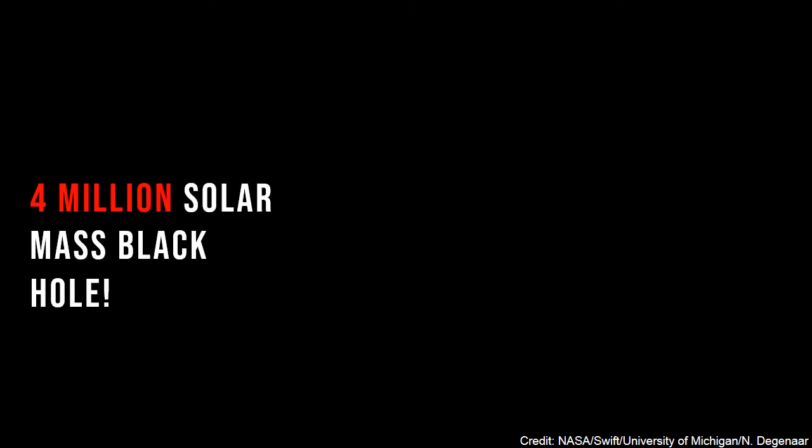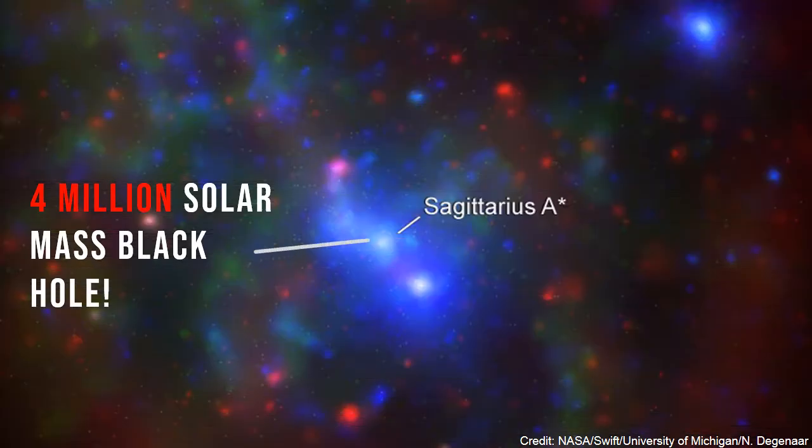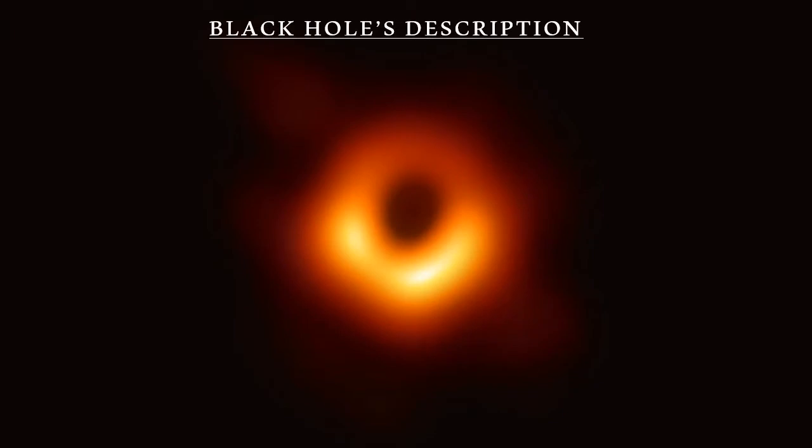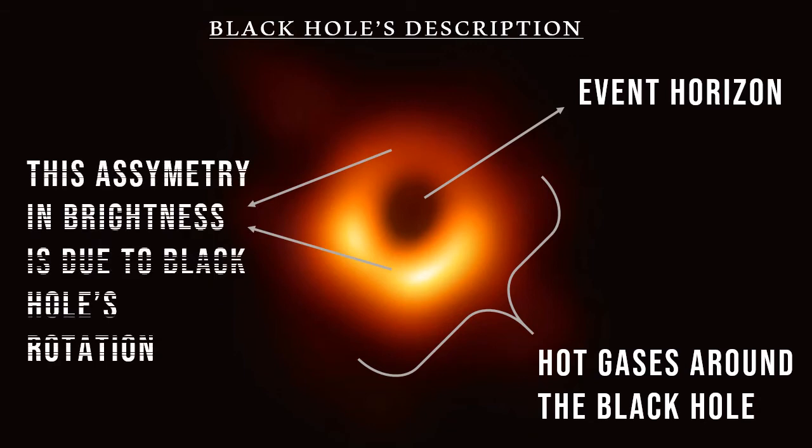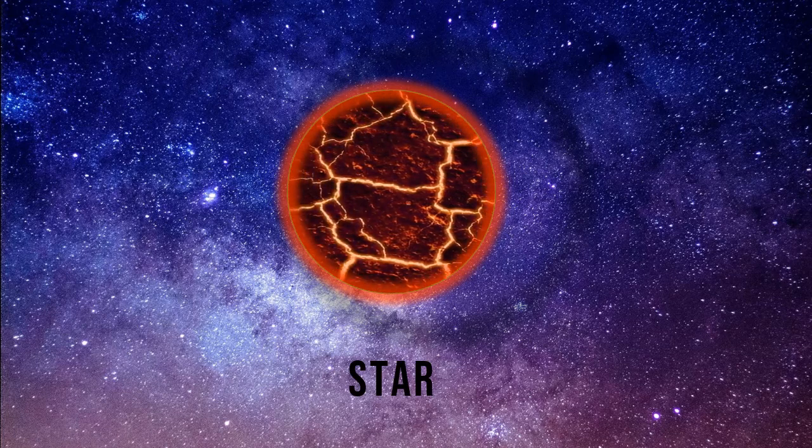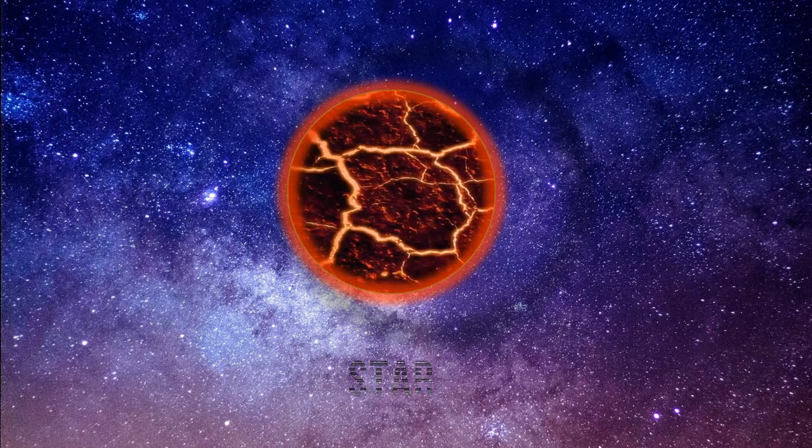Similarly, a 4 million solar mass supermassive black hole called Sagittarius A star is also present at the center of our galaxy Milky Way. This central black region we see here is the event horizon. While this outer glowing region is composed of the gases heated by the black hole's gravity. This asymmetry in brightness is due to the black hole's rotation. As black holes are formed from stars which are rotating, they maintain their rotational momentum even after the star's death.